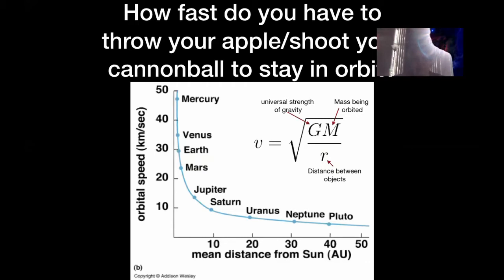The velocity you need is determined by three things. One is the universal strength of gravity — a constant that tells us how strong gravity is as a force. It also depends on how massive the object is that you're orbiting: you need to go faster if you're orbiting something massive like the sun or Jupiter, and slower if it's lower mass like the earth or moon. And it depends on how far apart you are — the closer you are to the center, the faster you have to go.